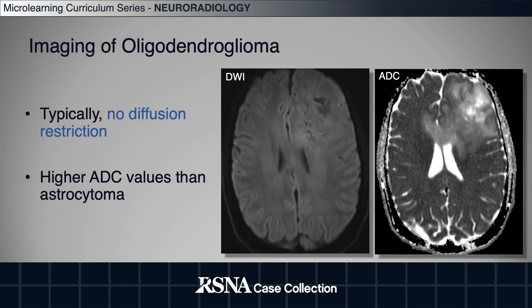Oligos typically demonstrate no diffusion restriction, and the ADC values in astrocytoma are usually lower.